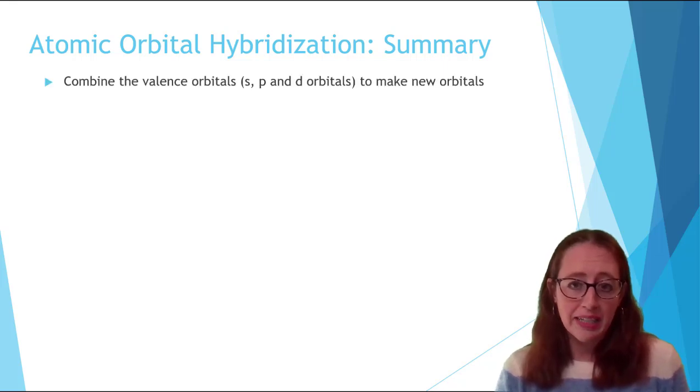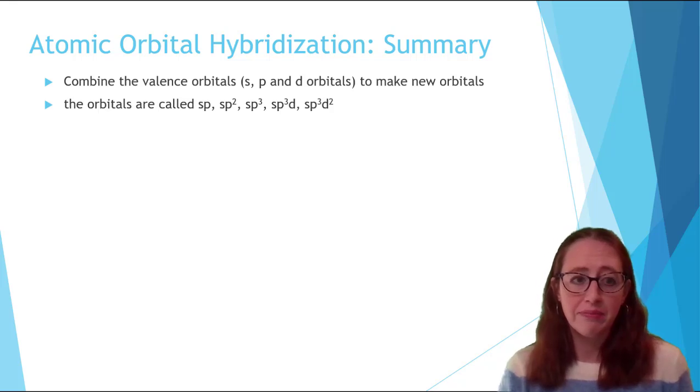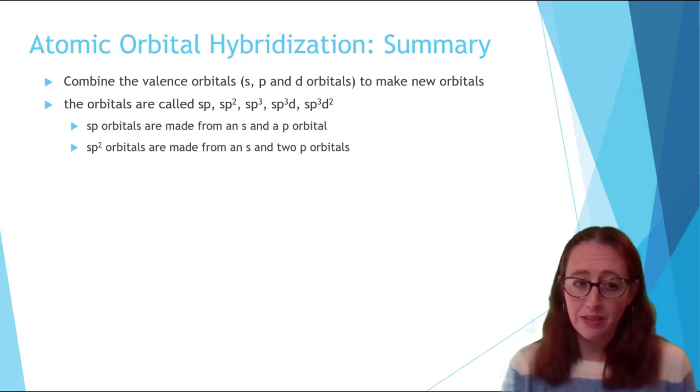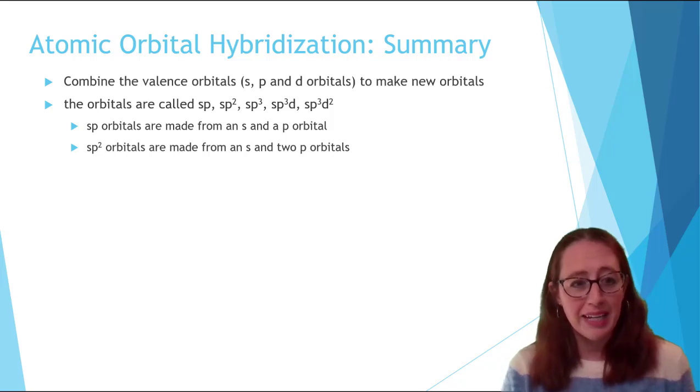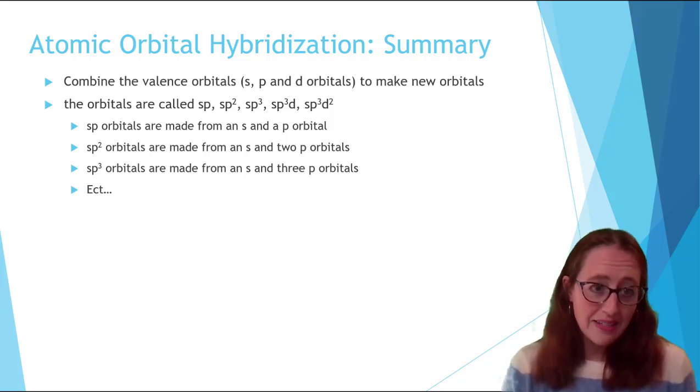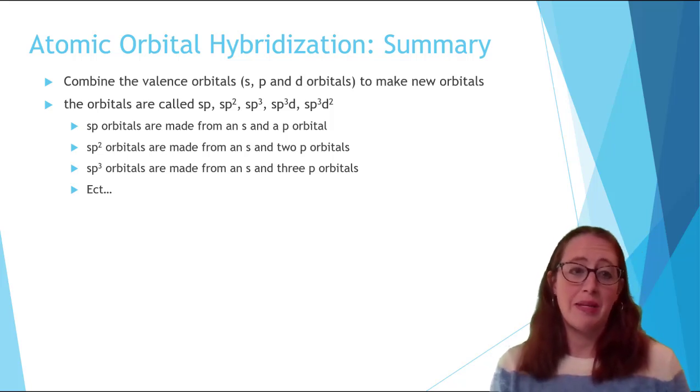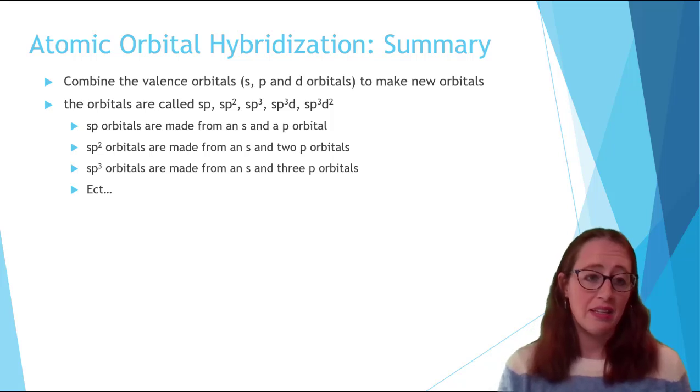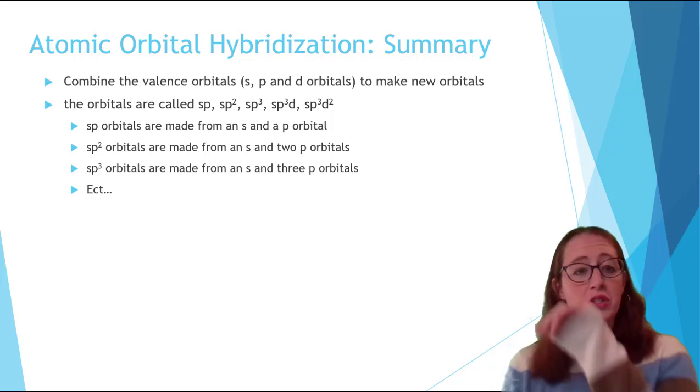Valence orbitals are combined to form new hybrid orbitals. These new hybrid orbitals are named by listing the orbitals which were hybridized in order to create them. So an S orbital combined with a P orbital would be an SP orbital. An S orbital combined with two P orbitals would be SP2. An S and three Ps, SP3. An S, three Ps, and a D, SP3D. Notice that the numbers are superscripted. That's important.